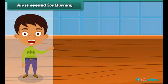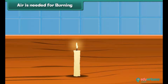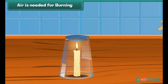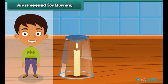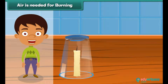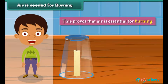Air is needed for burning. Let us perform an experiment. Light a candle, then invert a glass tumbler over it. This action cuts off the air supply to the burning candle. A little while later, the candle stops burning. This proves that air is essential for burning.